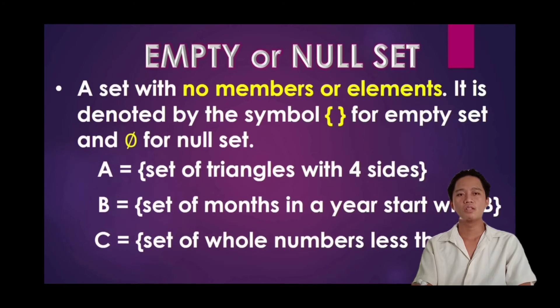In set B, set of months in a year starting with B. We all know that there's no month that starts with letter B. In set C, set of whole numbers less than 0, but 0 is not considered as a whole number.